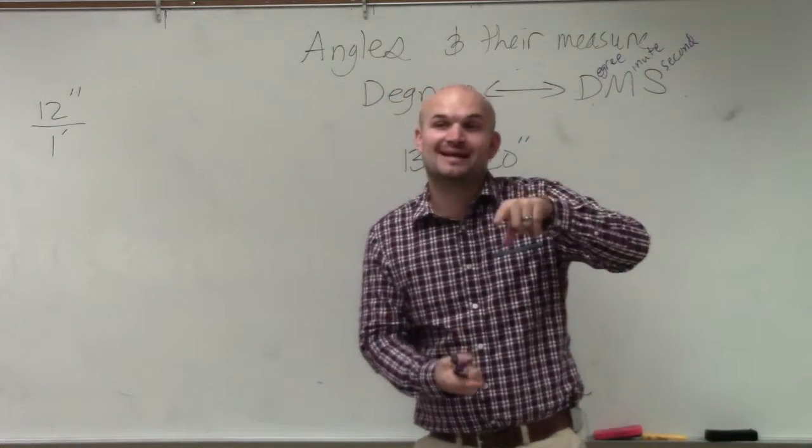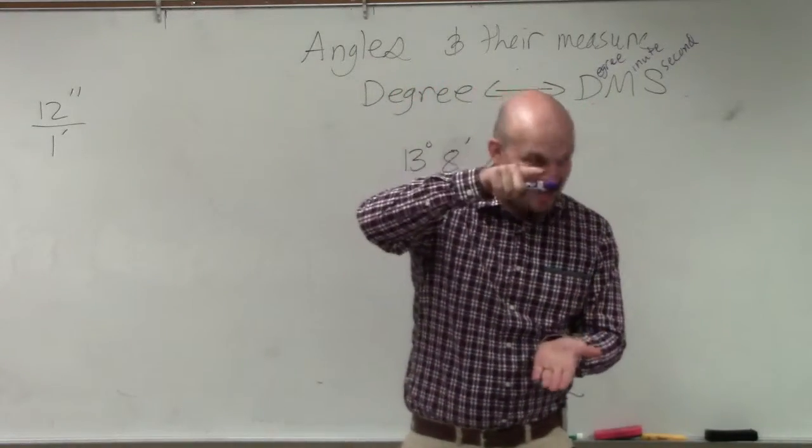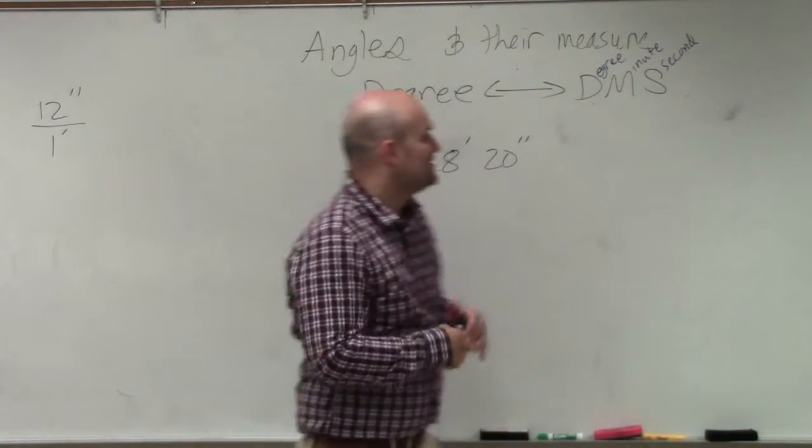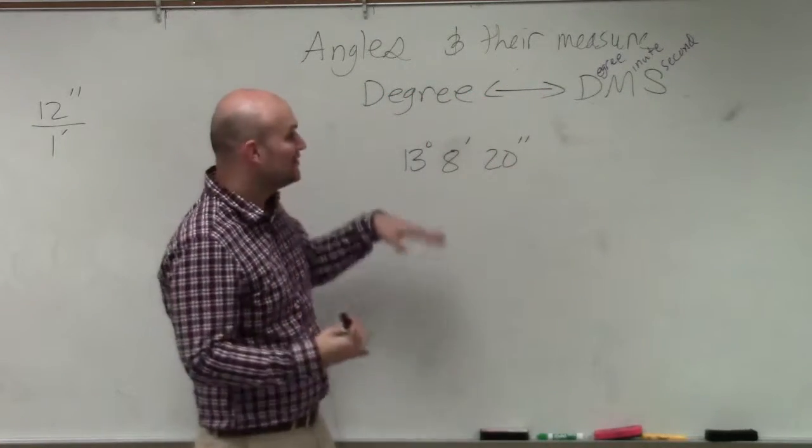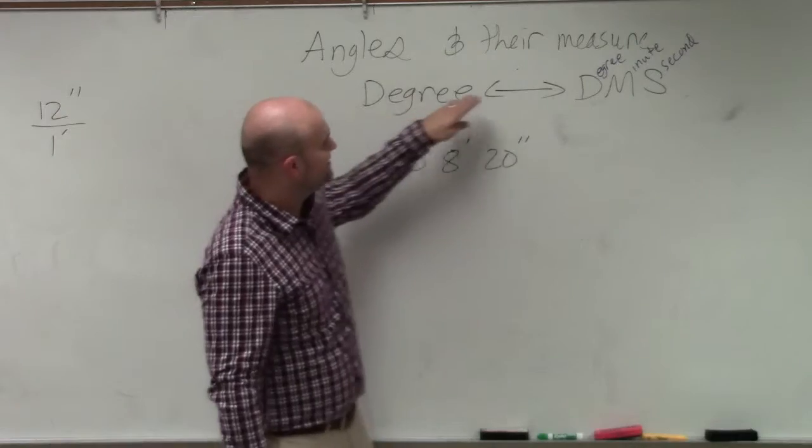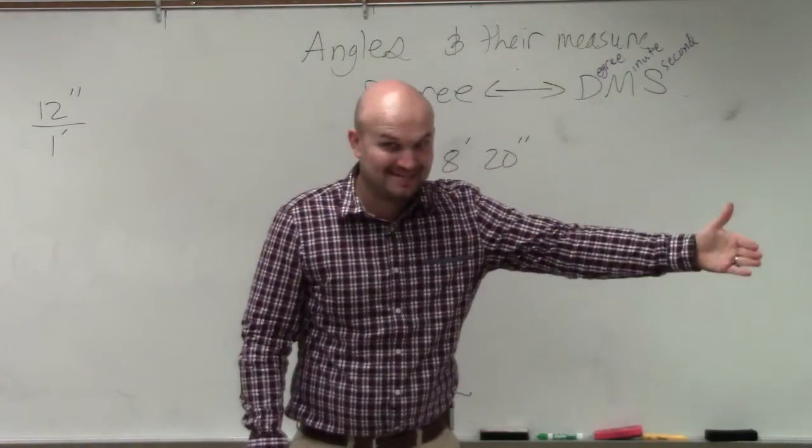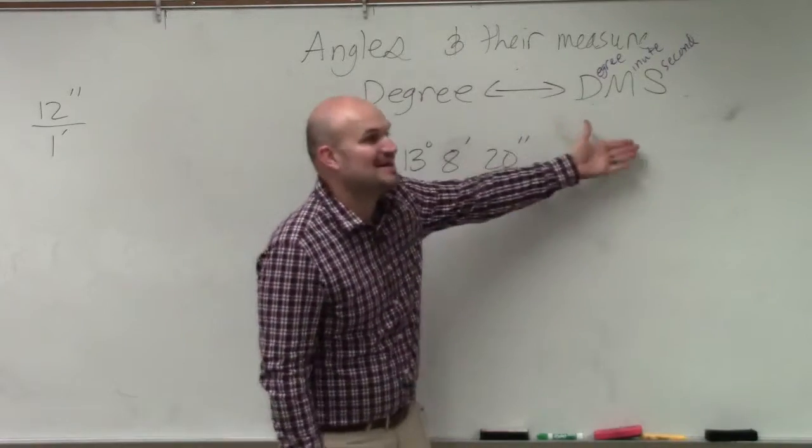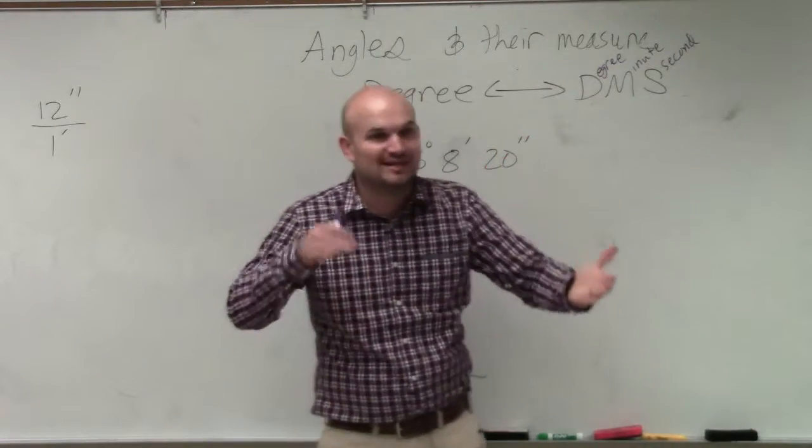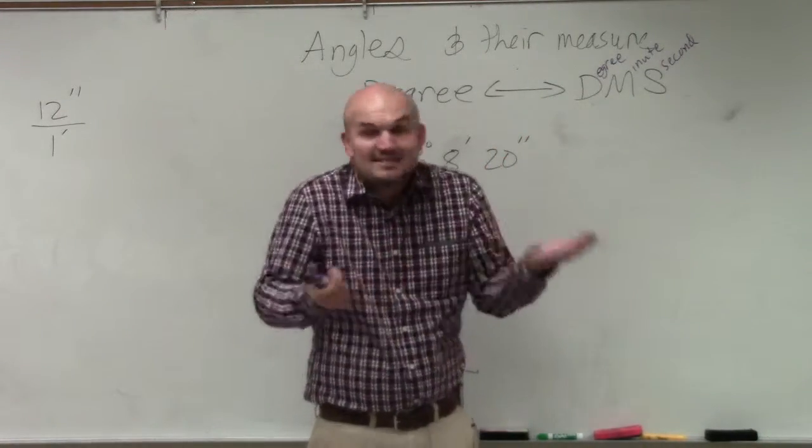When we went from degrees to radians, we multiplied by pi over 180. So to go from degree to DMS, we multiplied each decimal by 60. So if we're going to go from DMS to degree, you can think we'd be using division. And that's exactly what we're doing.